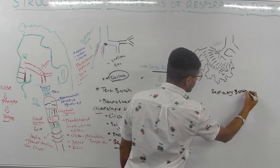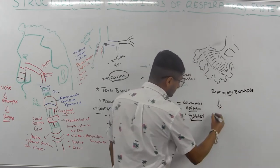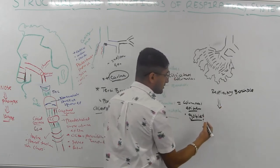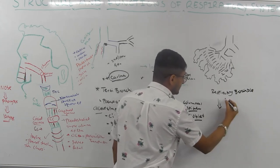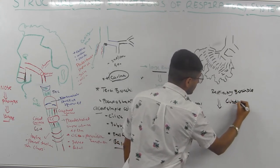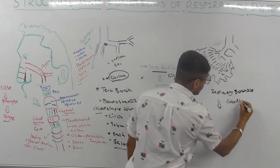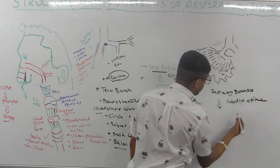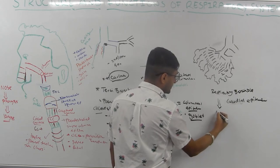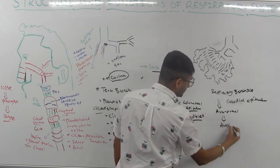One of the key features of the respiratory bronchioles is that the lining cells change. It's no longer columnar — it becomes cuboidal epithelial tissue. From the respiratory bronchioles, things split into alveolar ducts and then alveolar sacs.